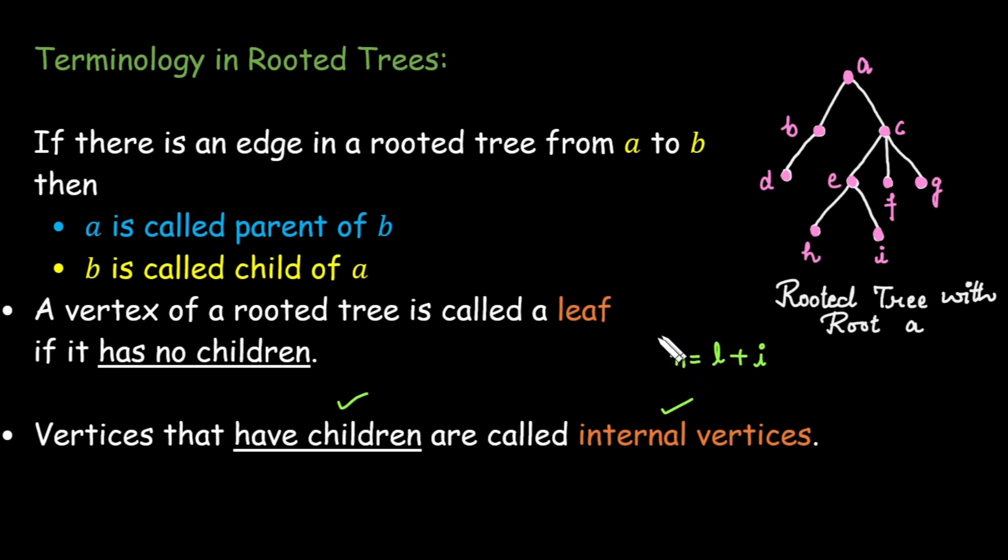So we can say that total number of vertices in a tree is equal to the number of leaves plus internal vertices.